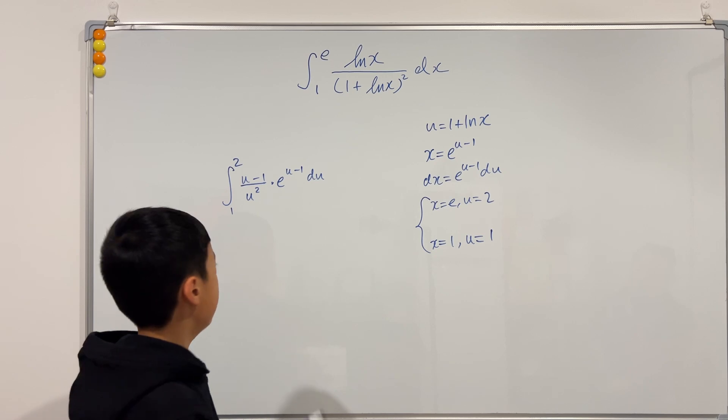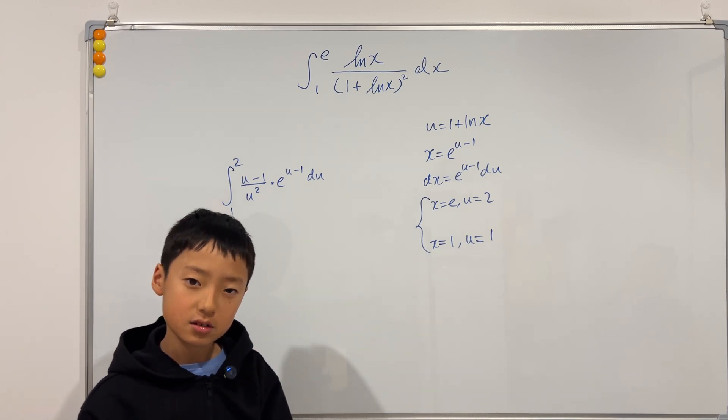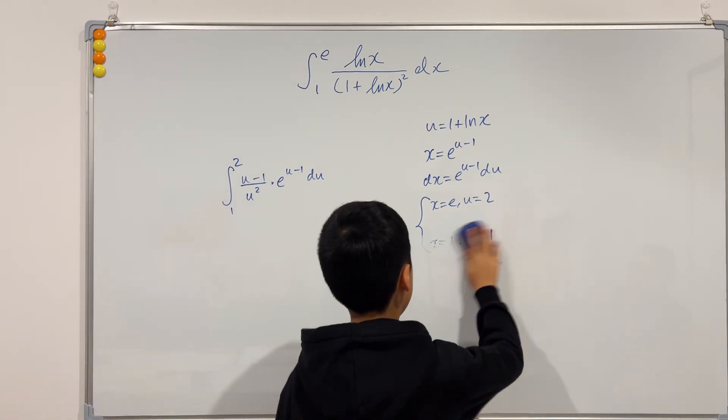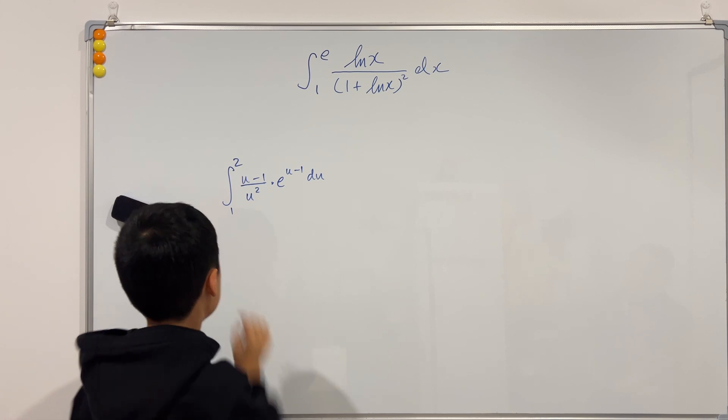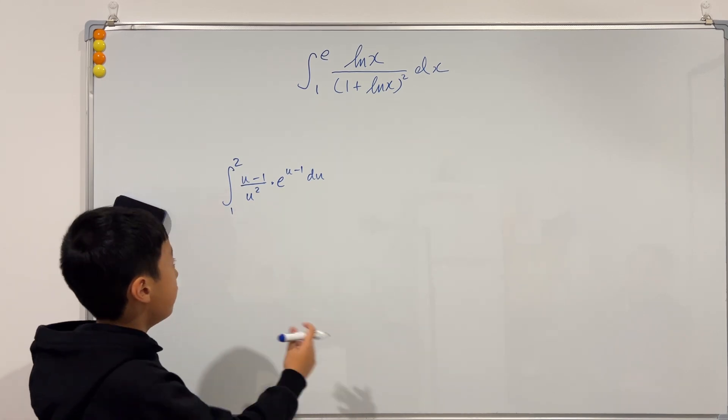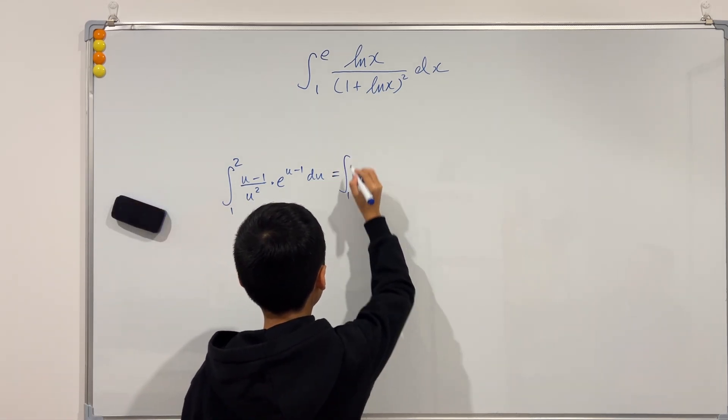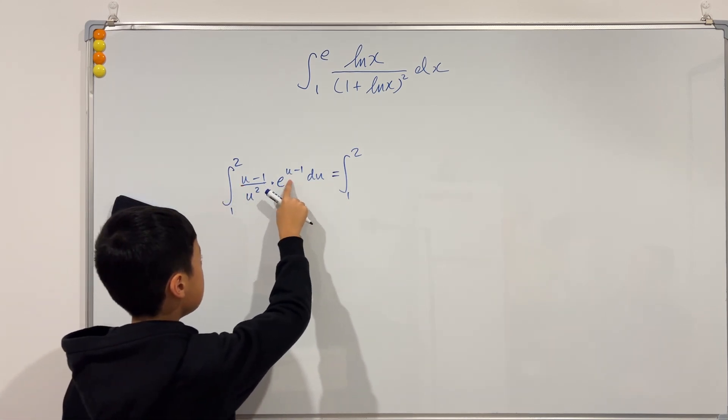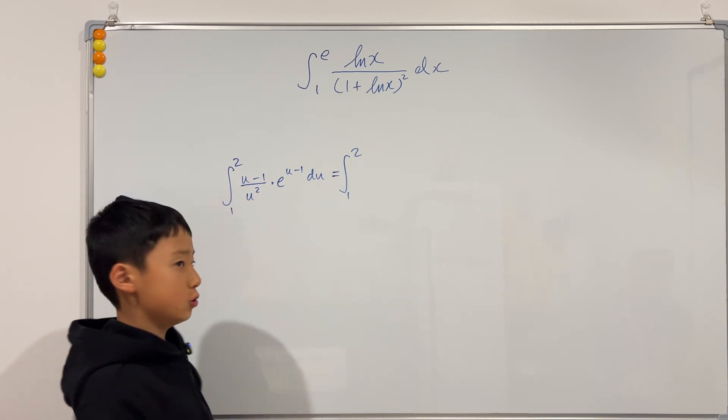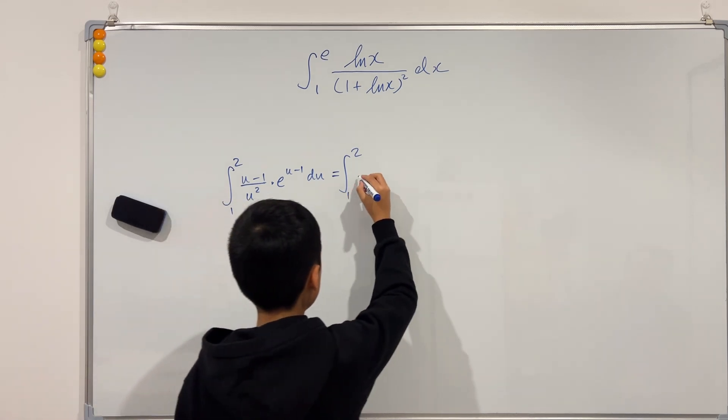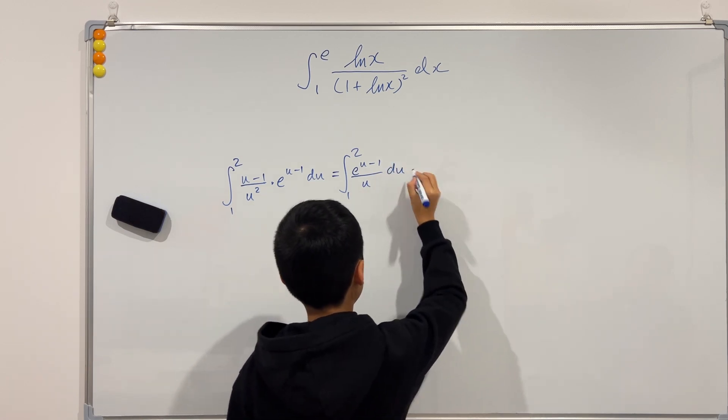So if you imagine yourself unpacking this time stat, then you see that we can separate this integral into two separate integrals. So if we separate this into two different integrals, then you can see that this first integral will be u times this divided by u squared. And this u can cancel out with one of these u's on the bottom. So the integral will just be e to the u minus 1 over u.